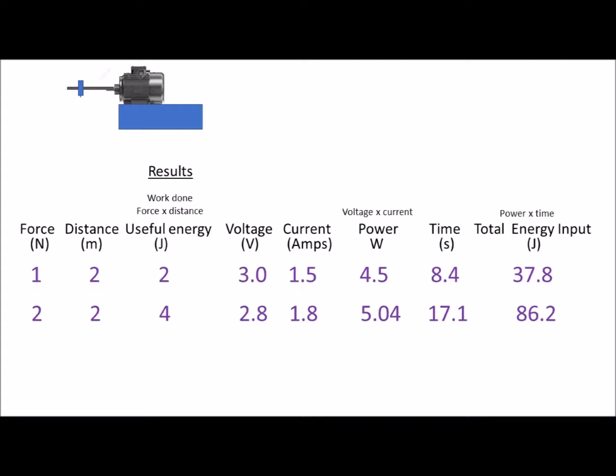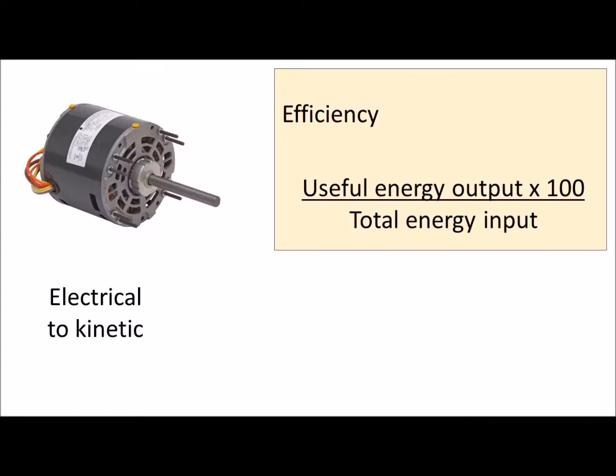So let me talk you through it. We've got the force, which is the weight, the distance lifted, which was 2 meters. Multiply those together, and you get useful energy output. We've then got voltage and current, which we multiply to give us power. And then power times time will give us the total energy input. Then efficiency is useful energy output divided by total energy input. Multiply by 100 if you want a percentage.